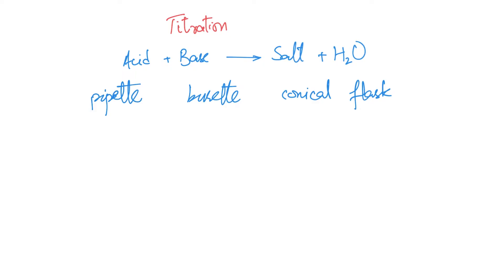To know how much of that is to be added, you use an indicator. These are the four requirements of any titration process. Pipettes usually have a fixed volume. For example, in the lab, you'll work with pipettes that are 25 cm³ or sometimes 50 cm³, but usually smaller ones, could be 10 cm³ as well.